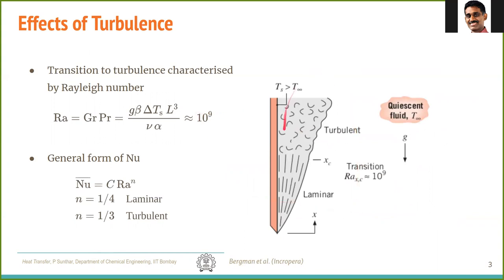Now let us see what turbulence does. Unlike in forced convection, you cannot independently control the velocity — the velocity driving natural convection comes from a natural length scale. As in flow over a flat plate, you initially have laminar regions, and at very large distances when the velocity picks up significantly, turbulence can occur.